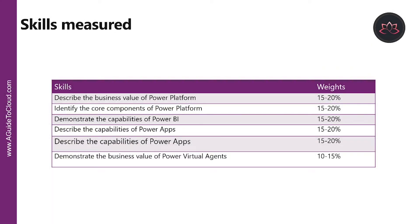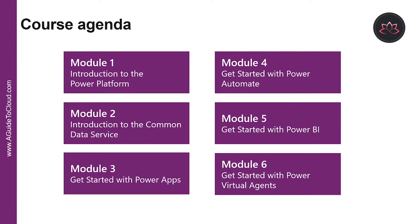Let's have a look at the skills measured on this certification course. There are six study areas on this examination. Microsoft expects you to understand how to describe the business value of Power Platform, and you need to identify the core components included within the Power Platform. You also need to focus on the capabilities around Power BI, Power Apps, and the business values of Power Virtual Agents. On the right-hand side, you can see the weightage — the higher the weightage, the more questions you are likely to get on this examination.